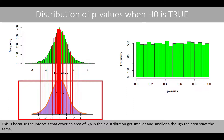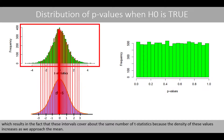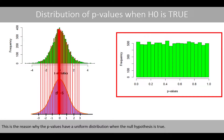This is because the intervals that cover an area of 5% in the t-distribution get smaller and smaller, although the area stays the same. This results in the fact that these intervals cover about the same number of t-statistics, because the density of these values increases as we approach the mean. This is the reason why the p-values have a uniform distribution when the null hypothesis is true.